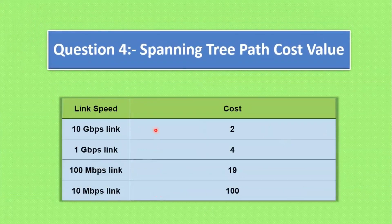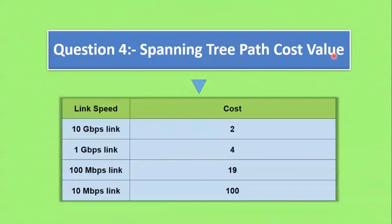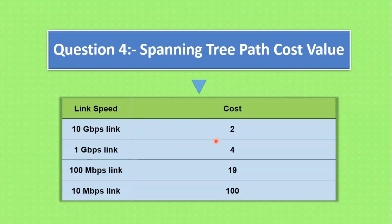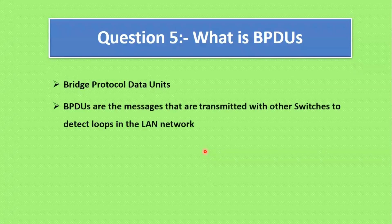The next question is about Spanning Tree path cost values — a very interesting interview question. The cost for a 1 Gbps link is 4, and the cost for a 10 Gbps link is 2. The default cost values are according to IEEE 802.1D and were standardized in 1998. These default cost values can be manually overridden by a network administrator to influence path selection in the spanning tree.